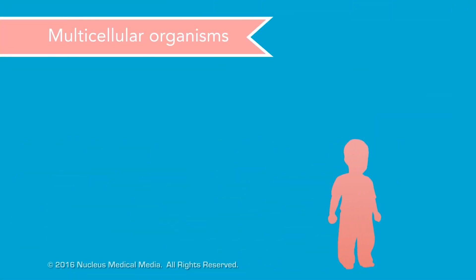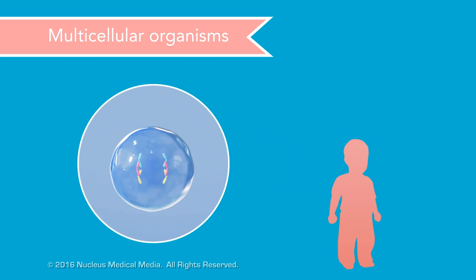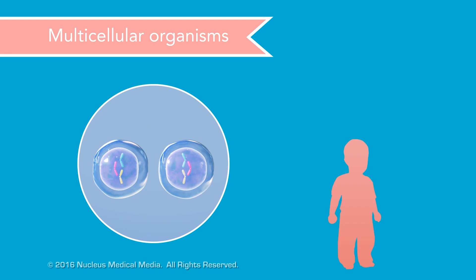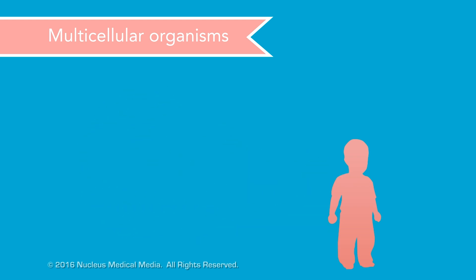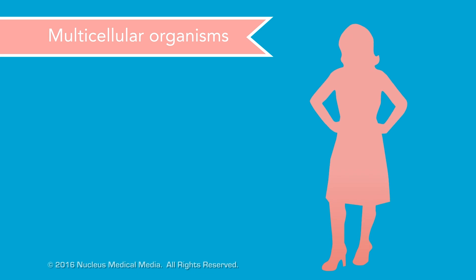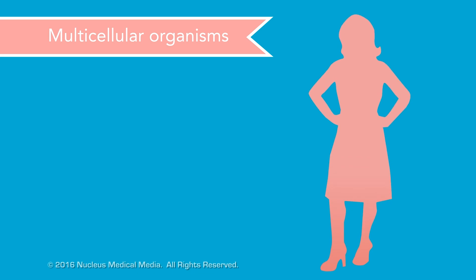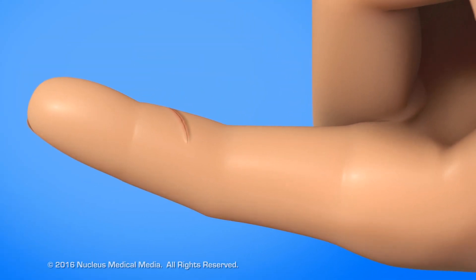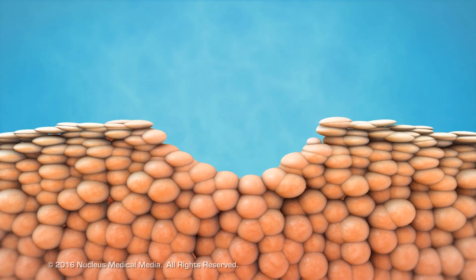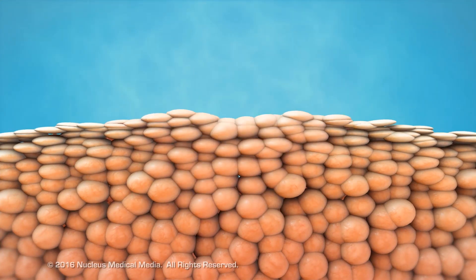Cells in a multicellular organism also reproduce by cell division. But the new daughter cells that are produced are not two separate organisms. Instead, these new cells are just parts of the organism, allowing it to grow or sometimes replacing cells that are worn out or injured. For example, your body heals a paper cut through division of your skin cells, occurring at the edges of the cut.